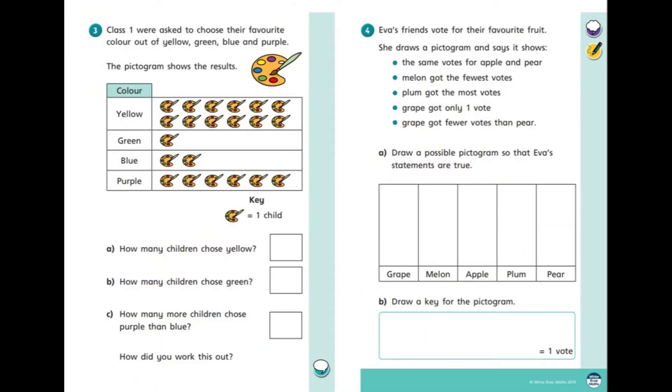This is our silver sheet today so let's look at number three together. Class one were asked to choose their favorite color out of yellow, green, blue and purple. The pictogram shows us the results so answer the questions below using the pictogram to help you.